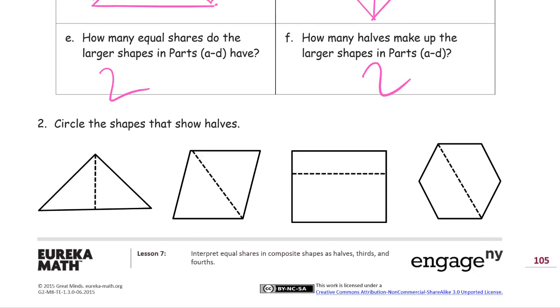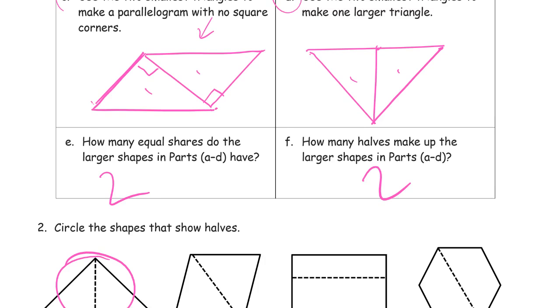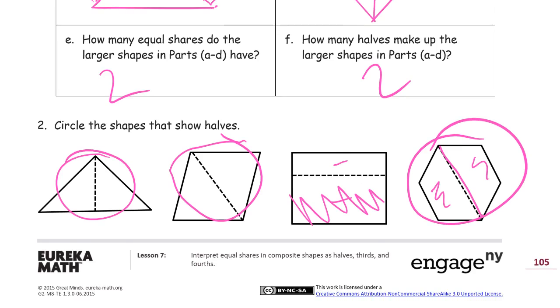So circle the shapes that show halves. Here we have two equal halves. That's one of the examples that we had for D. It's the same one, right? And then this one here is just like C, except this made a rhombus. Now this has two parts, but they're not equal parts, right? Because this one is way bigger. So don't circle that one. And this hexagon looks like it's two of those red pattern blocks, the trapezoids put next to each other. So this one is definitely equal to that one. So I'm going to circle that. So those are two parts, and they're equal, so they're halves.